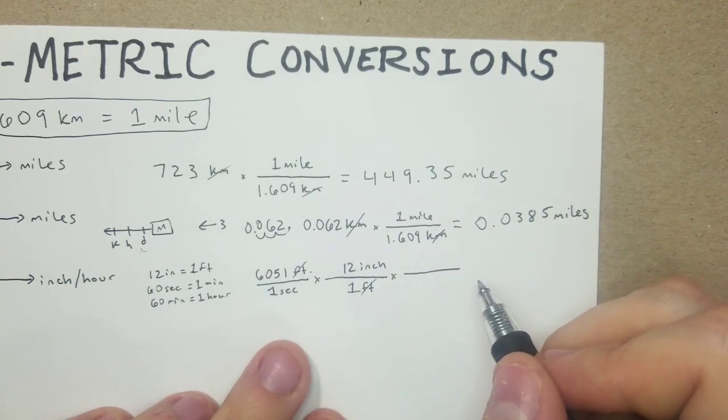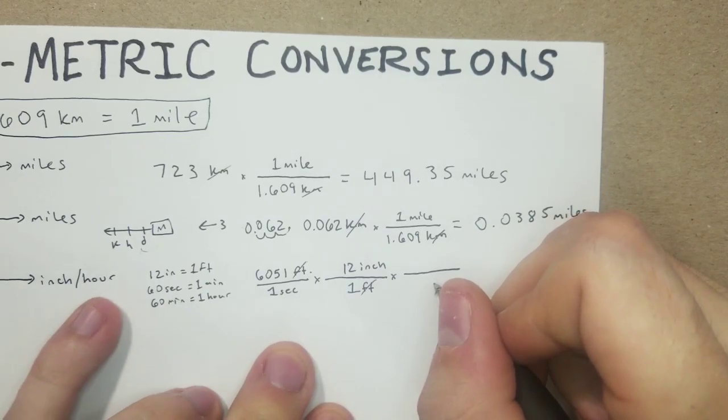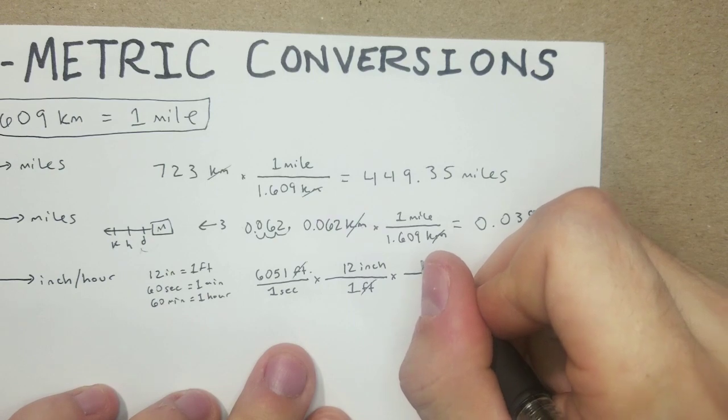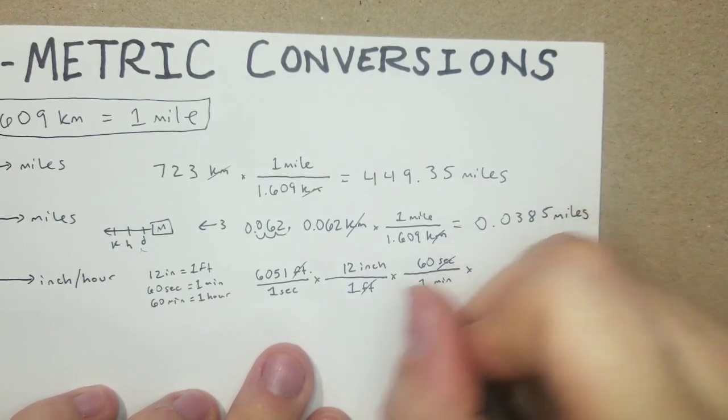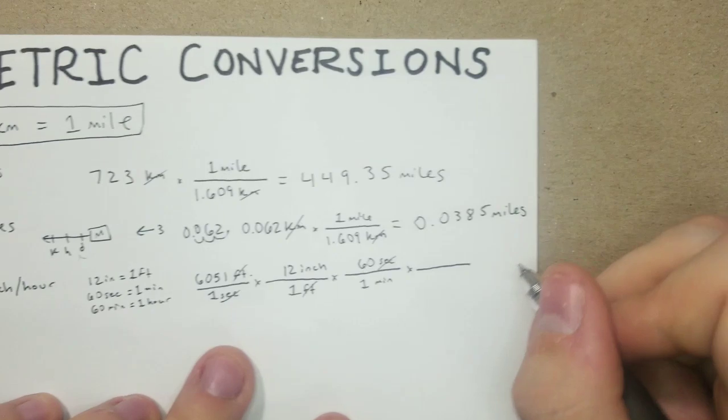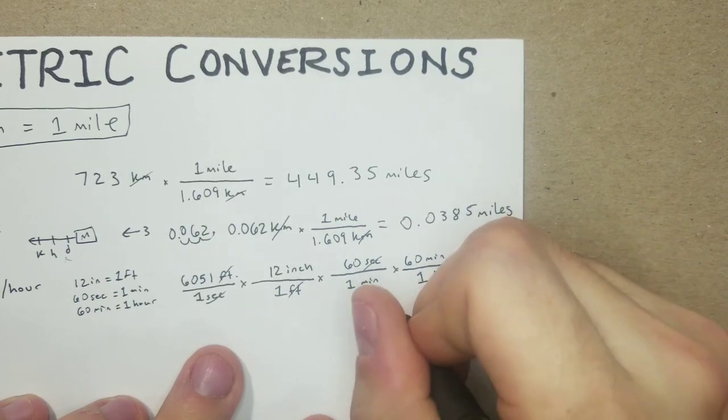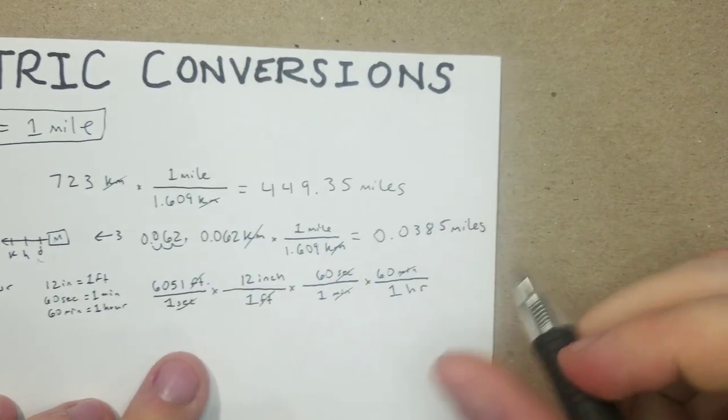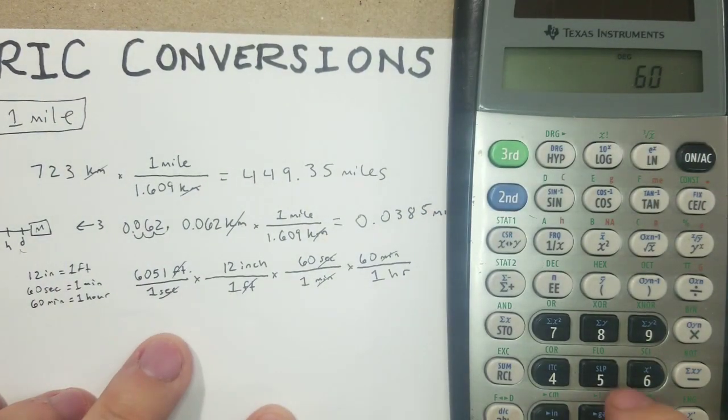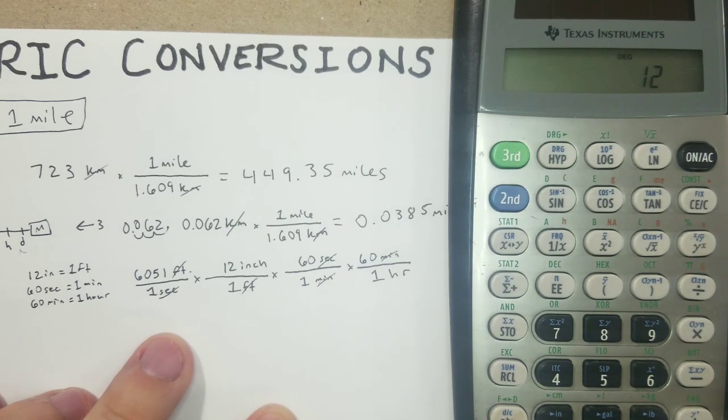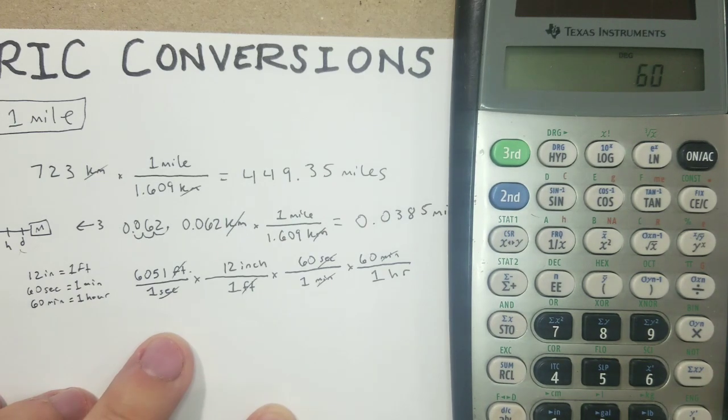And now we need to get out of seconds. Putting the second on the top is going to help us cancel that out. We're trying to get to per hour, so we know there are 60 seconds in one minute. Seconds cancel. Now we're in inches per hour, which is what we're looking for. So now we can just throw in the math. We've got 6051 times 12 times 60 times 60. We're getting a pretty massive number there.